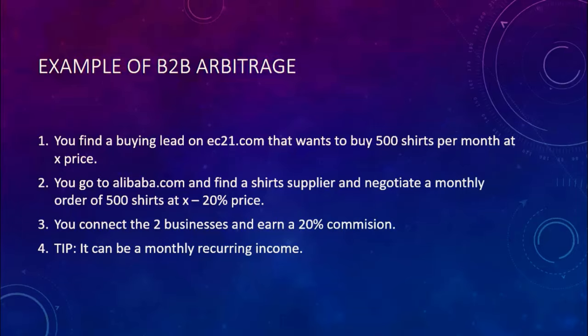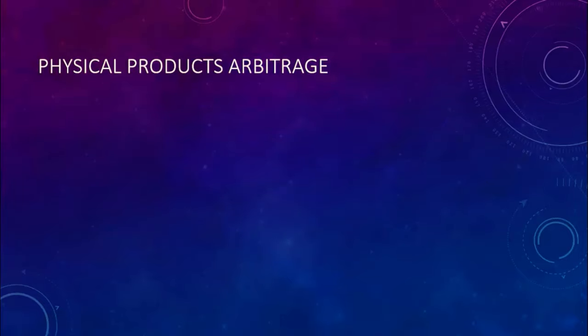The big advantage of business-to-business arbitrage — and why I like this model very much — is that it can be a monthly recurring income. Most of the time, businesses have monthly transactions because they need a certain material or supply to run their business on an ongoing basis. That means you'll have recurring transactions again and again, which means recurring income for you if you negotiate your deal right.